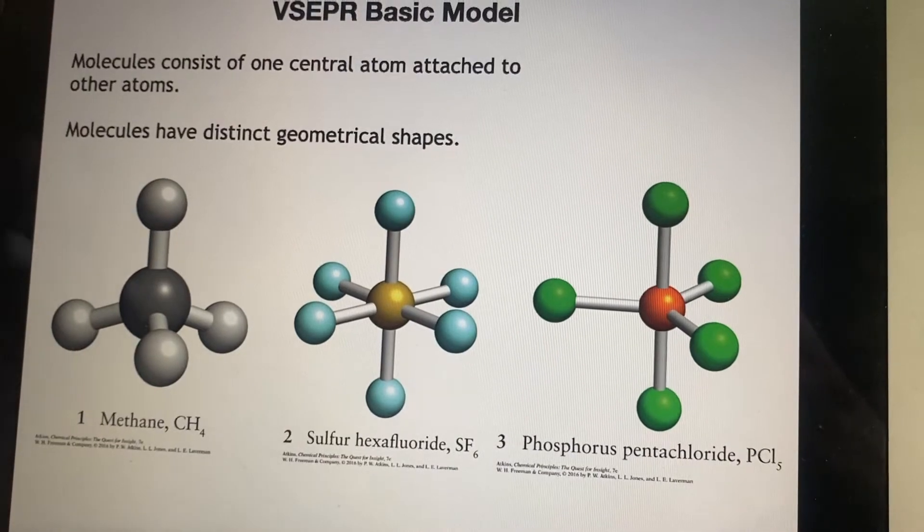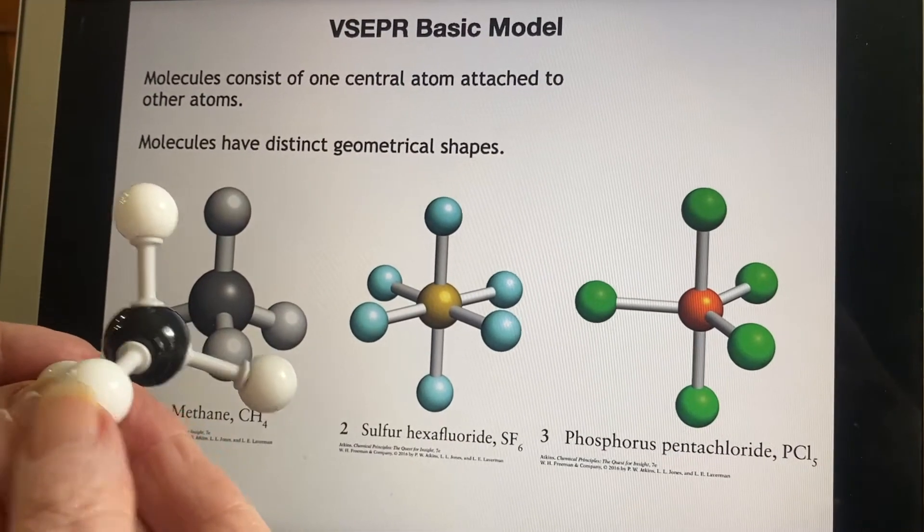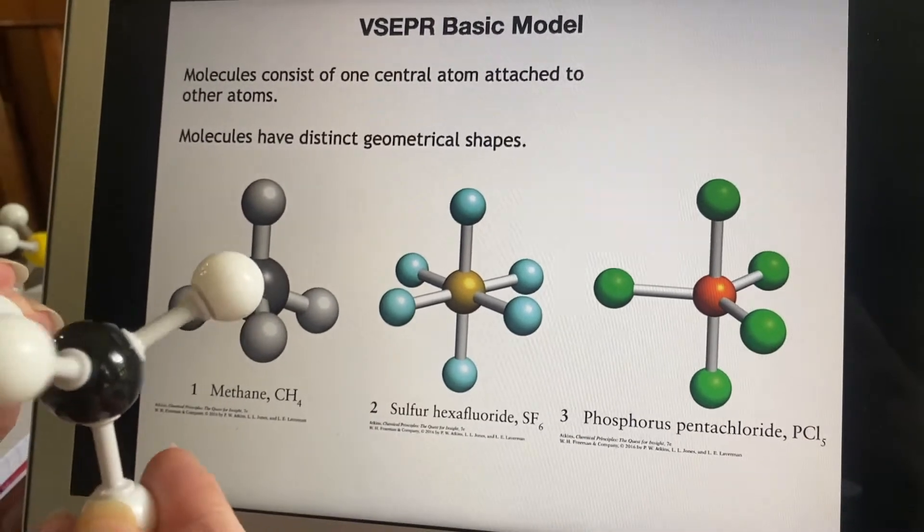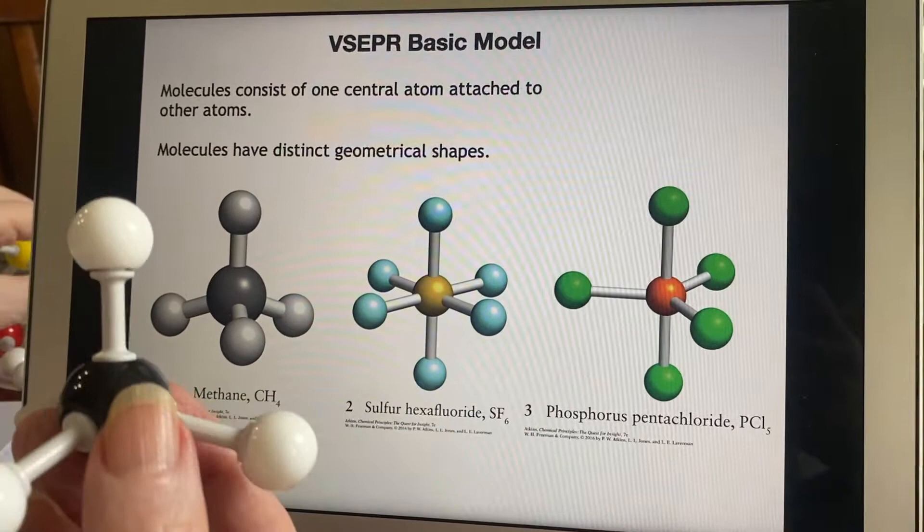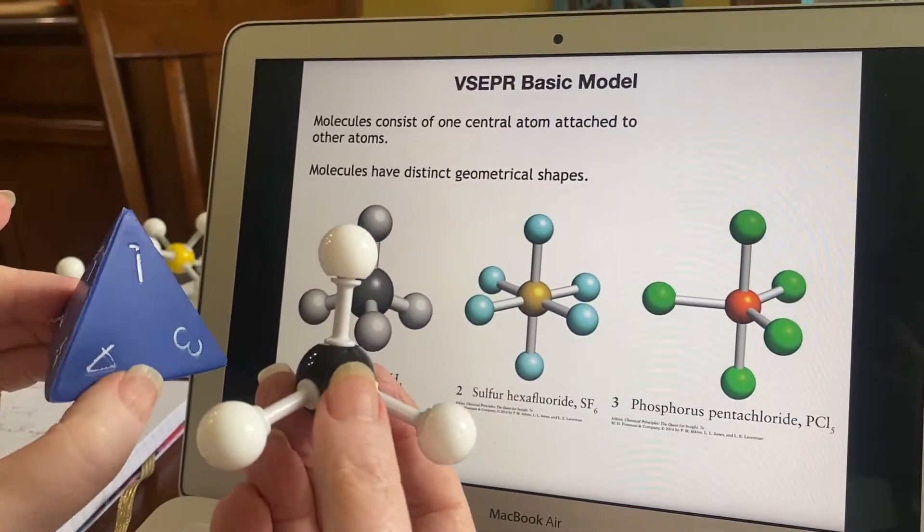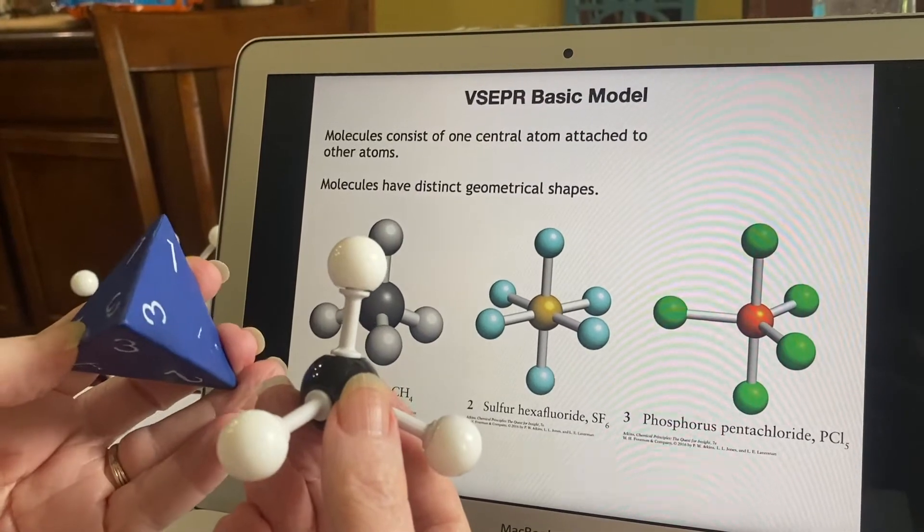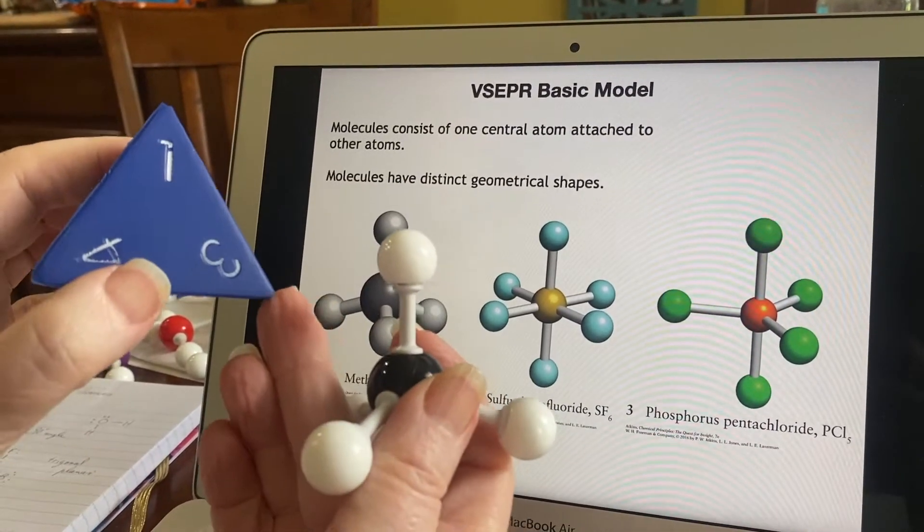And here are some of them. You could have methane. Now, this is a flat model. This is an example of what it looks like. Okay? So there it is. And if you think about it for a while, you'll realize that that is a tetrahedron where the outside atoms are the points, the vertices on the tetrahedron.